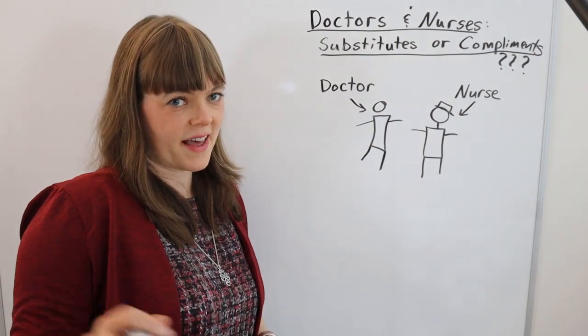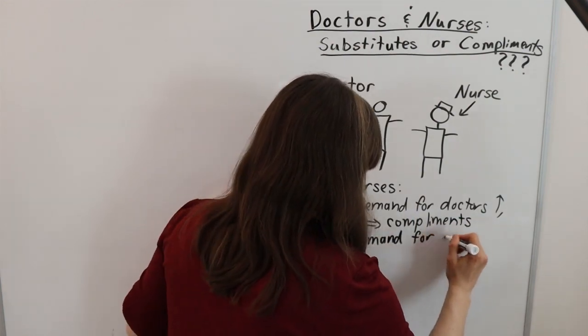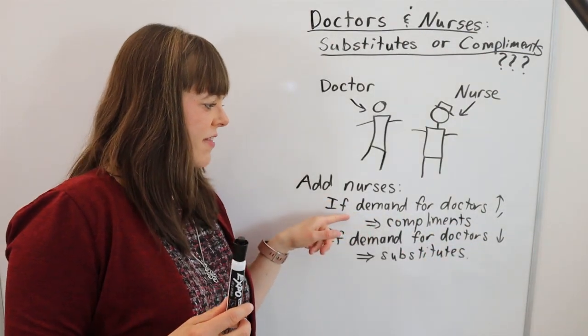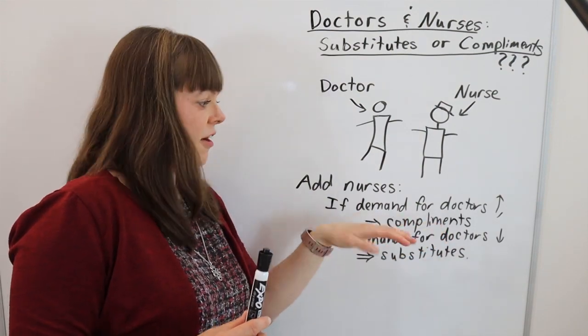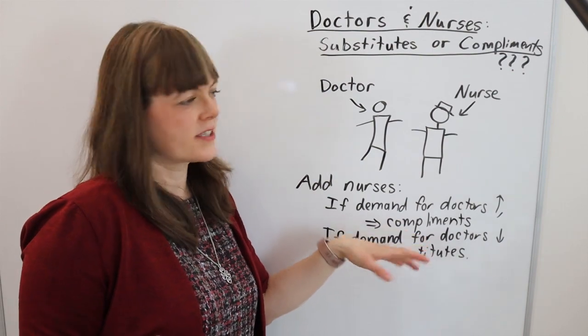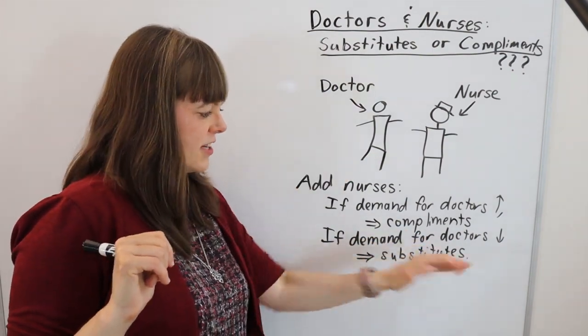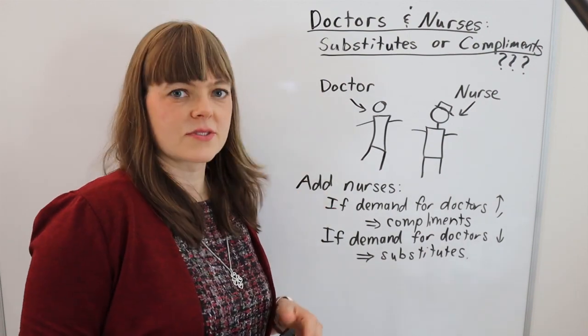So let me summarize that. When you add nurses, if that increases demand for doctors, it's complements. And oftentimes we'll measure the increase of demand for doctors by the doctor's salary. If the demand for doctors decreases when you add nurses, that means that these two are substitutes.